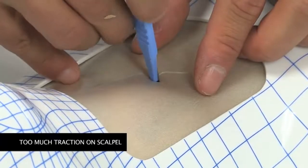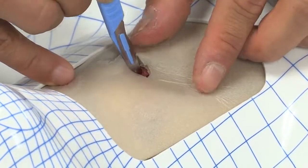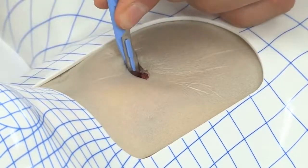After the stab incision, too much traction on the scalpel will narrow the incision, possibly rotate the trachea and can make the insertion of the bougie more difficult.